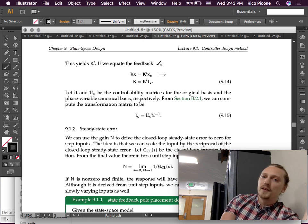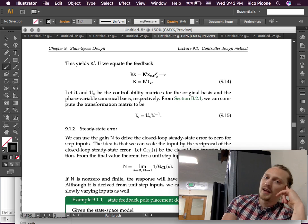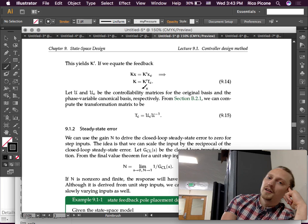This yields K prime. If we equate the feedback, then we know that KX has to equal K prime XC. So, those are both of the feedbacks. We know that has to be the same. And, therefore, you can solve for K, which is to say that K is just equal to K prime TC.